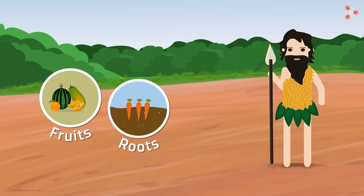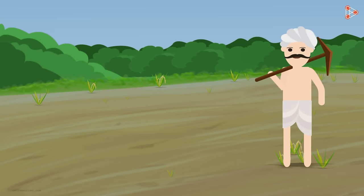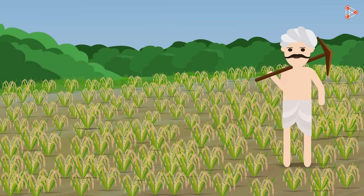Man was nomadic for many years. Survival was mainly dependent on fruits, roots and hunting of animals for food. Eventually, man learnt the culture of cultivation. Man learnt agriculture by observing nature.